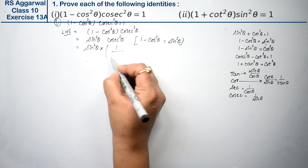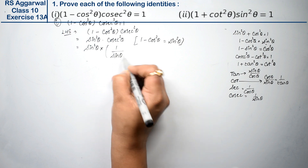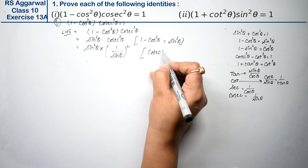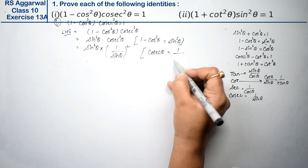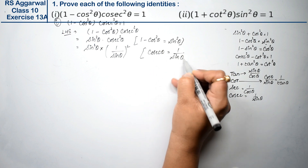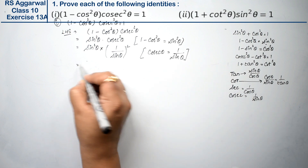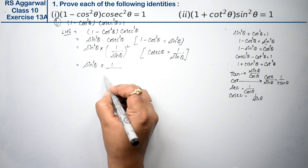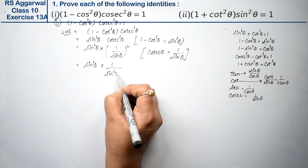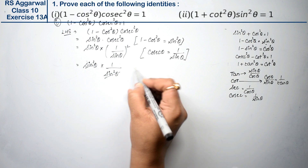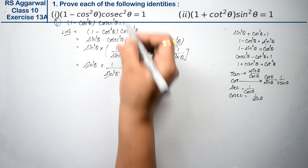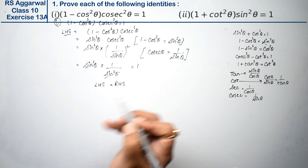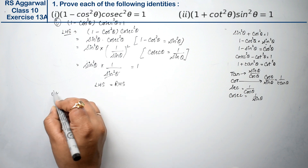Now sin squared theta remains as it is, multiplied by csc squared theta. We write csc squared theta as 1 upon sin squared theta. Why? Because csc squared theta equals 1 upon sin squared theta. So we get sin squared theta into 1 upon sin squared theta. Now it cancels out. So how much is it? 1. We had to prove this. Hence, left-hand side is equal to right-hand side.